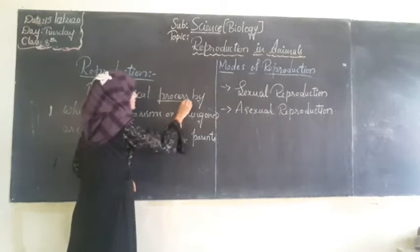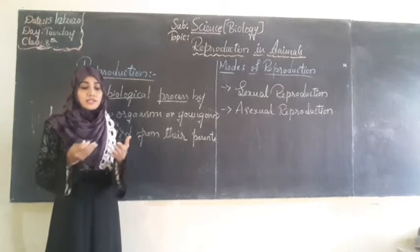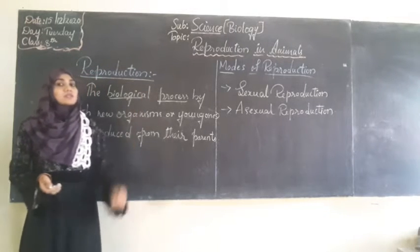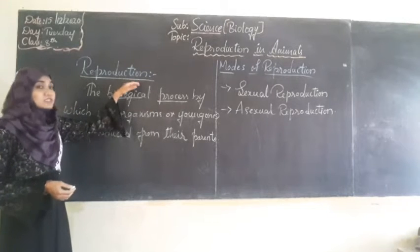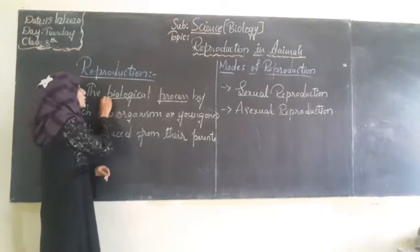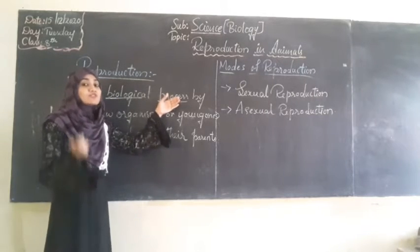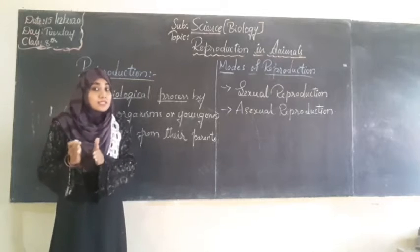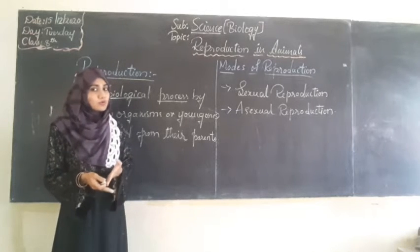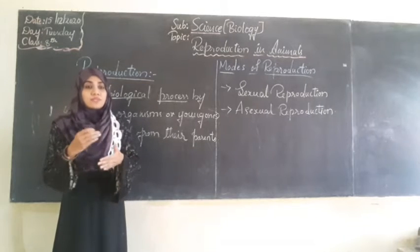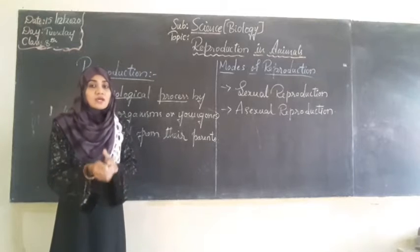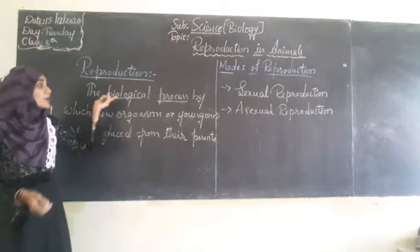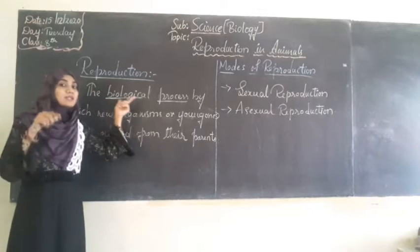Reproduction is a biological process, just like excretion, digestion, respiration, and many other biological processes. Similarly, reproduction is also a type of biological process. Why is it called a biological process? Because 'bio' means life — it is a process which occurs only in organisms that have life. Non-living things cannot reproduce. Only living organisms give birth, and hence it is called a biological process.